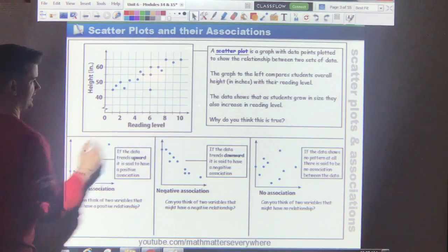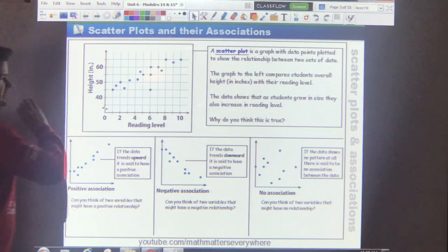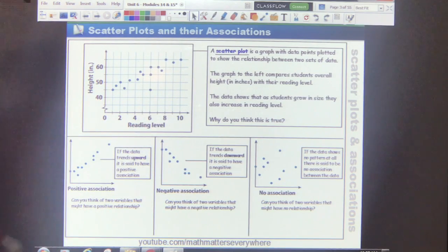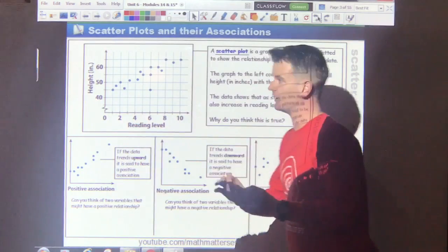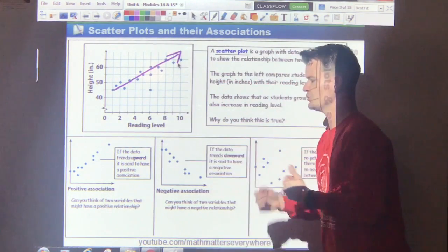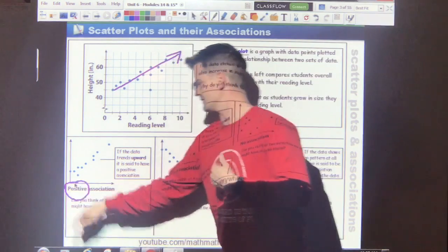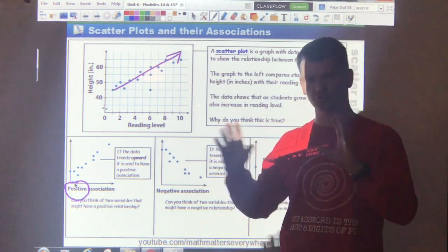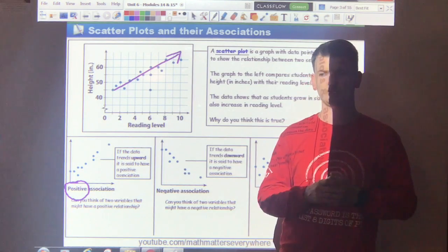Basically we have the x-axis and the y-axis. In this graph right here, the scatter plot compares reading levels to the overall height of the children. As we can see, as we move from left to right, for the most part the data increases. This is known as having a positive association. When both items being measured, both quantities increase, that's a positive association.